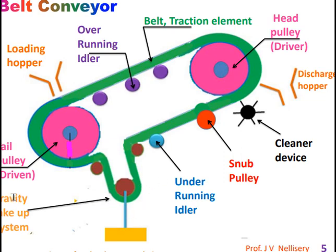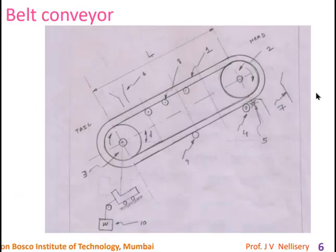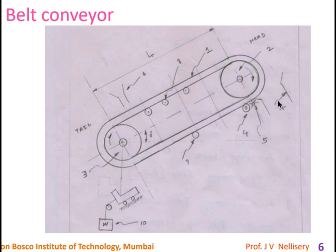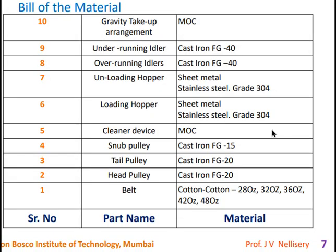A hand-drawn diagram can be made showing part number 3 as the tail pulley, part number 2 as the head pulley, 7 as the unloading hopper, 6 as the loading hopper, and L as the center-to-center distance between the two pulleys.